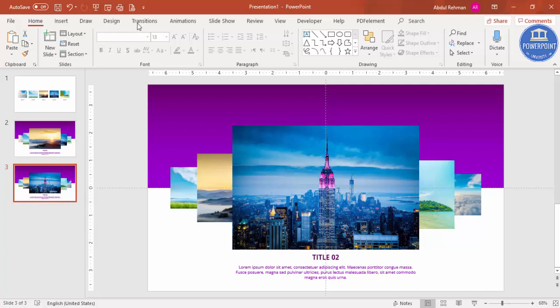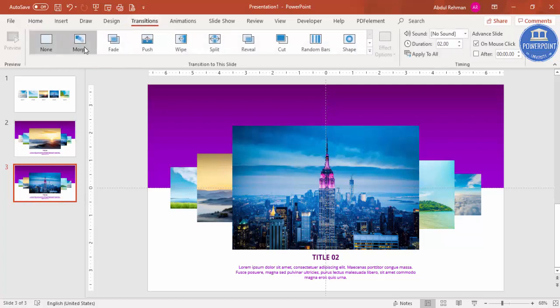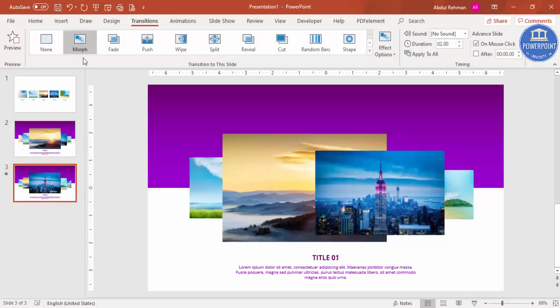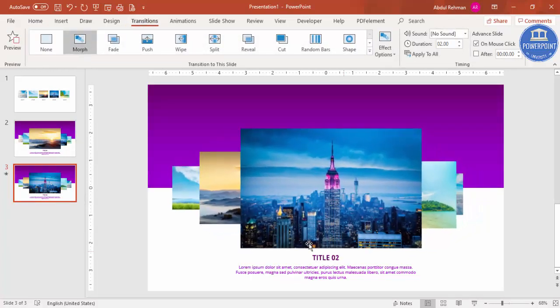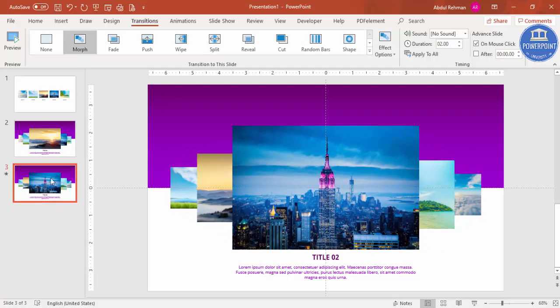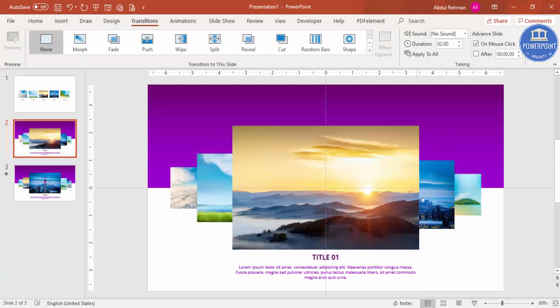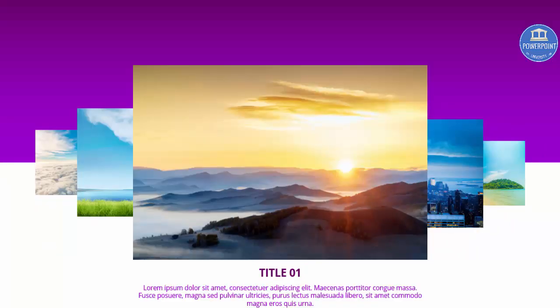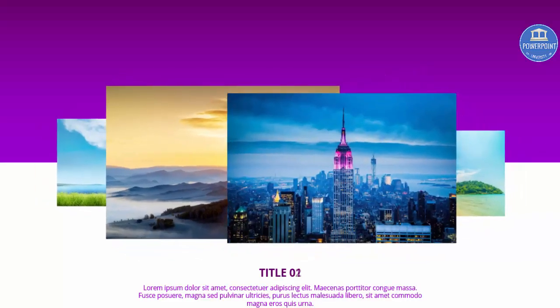Now select the second slide, go to Transitions, and click Morph. You can see the images start moving. If I run the slide show, when I click, the carousel effect works perfectly.